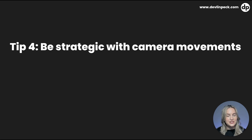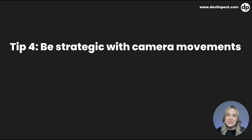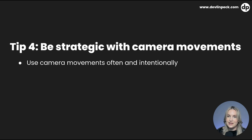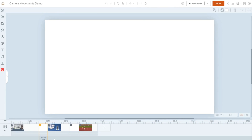Tip number four is to be strategic with camera movements. You can incorporate camera movements into almost any scene, and simple actions like zooming in or zooming out can really enhance the effect of your video. Think about your favorite TV show — the camera is constantly slightly zooming in, zooming out, tracking from one side to another, always focused on what they want the audience to see. That's why it's really important to use camera movements often and intentionally. Vyond gives you the ability to create a wide range of different types of camera movements.